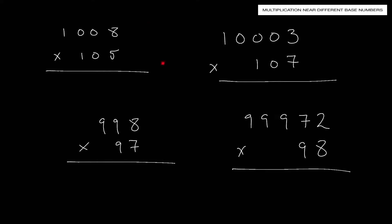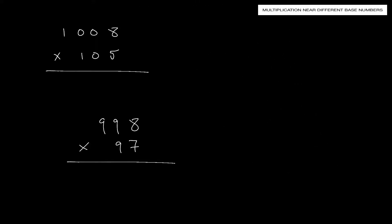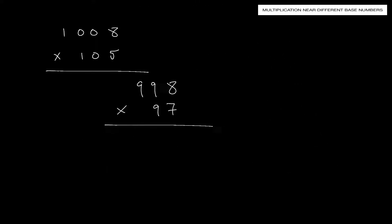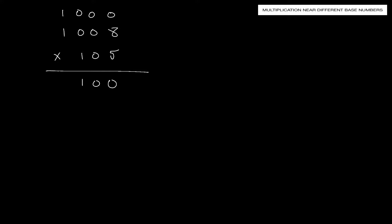We'll start with these two easier problems. So we have 1,008 times 105. The number 1,008 is very close to base number 1,000, and 105 is very close to base number 100.